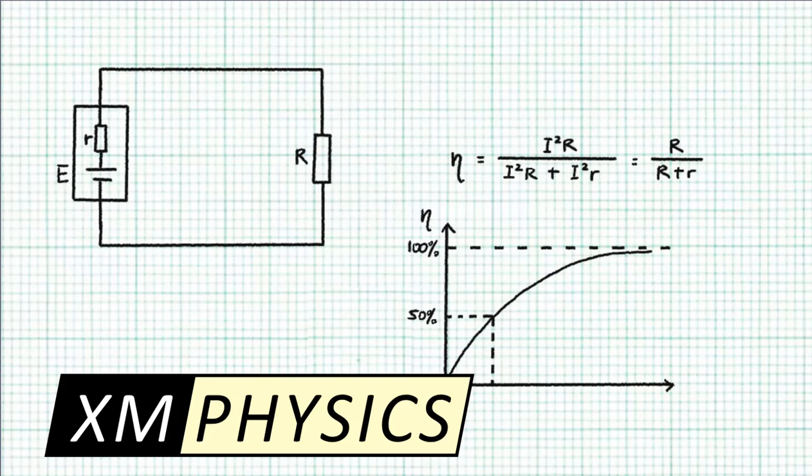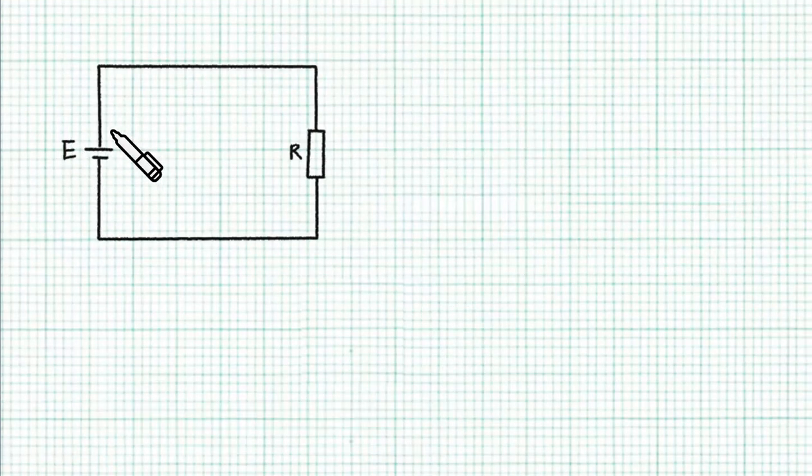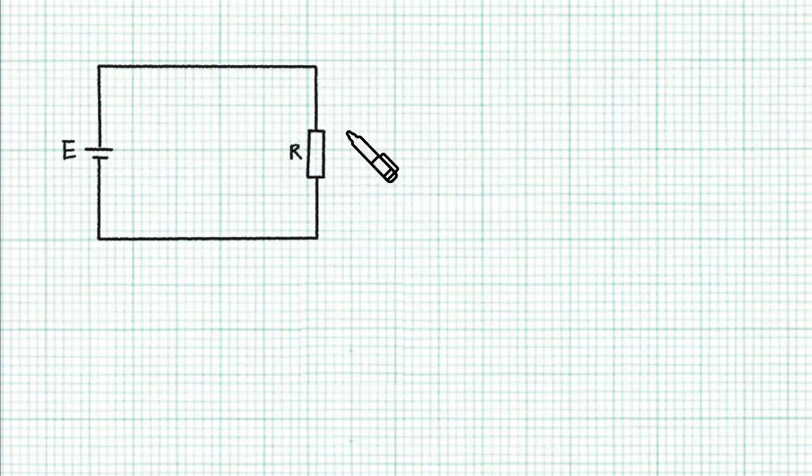Hello everyone, this is XMPhysics. If we have a battery with negligible internal resistance, then whatever the value of the load resistance, the efficiency is always 100%. Because whatever power that is delivered by the battery is consumed in the external circuit, so the efficiency is 100%.